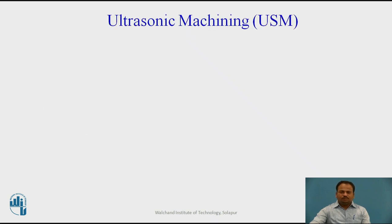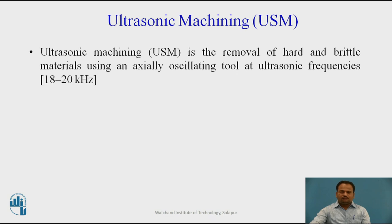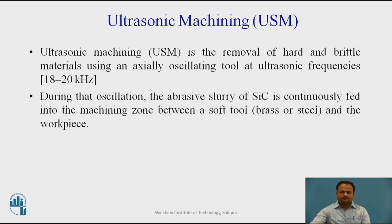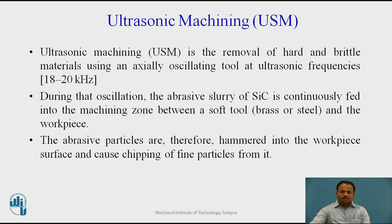What is ultrasonic machining process? Ultrasonic machining is the removal of hard and brittle materials using an axially oscillating tool at ultrasonic frequencies, i.e. between 18 to 20 kHz. During those oscillations, the abrasive slurry of silicon carbide is continuously fed into the machining zone between a soft tool — which is made up of brass or steel — and the workpiece. The abrasive particles are therefore hammered into the workpiece surface and cause chipping of fine particles from it, and therefore machining occurs.